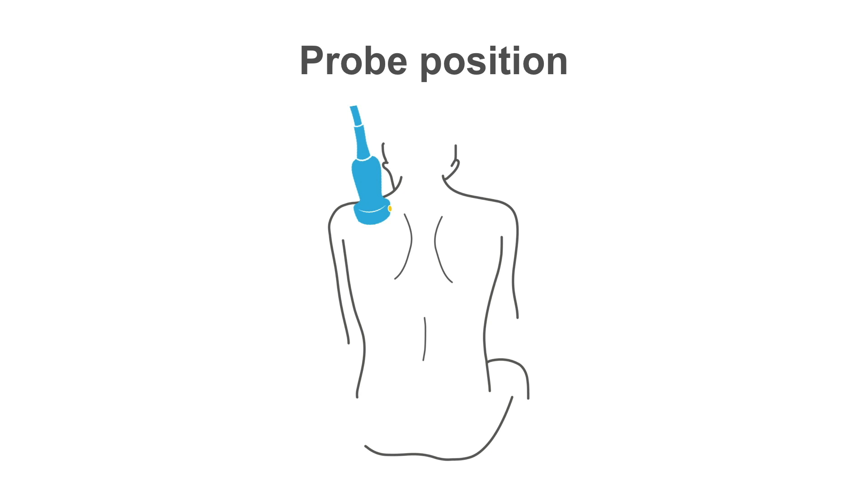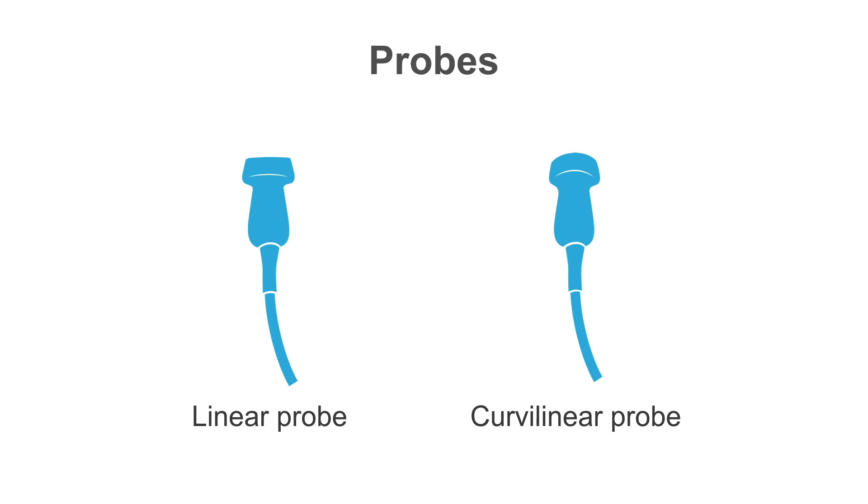In terms of probe selection, the two most common used are the linear probe and the curvilinear probe. For larger patients you'll need the curvilinear probe here on the right. This probe, as you see, is bigger and it goes deeper into the body. The linear probe on the left of your screen doesn't go as far into the body, so it won't give you the image you need in a grand majority of patients.